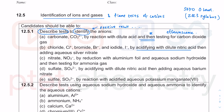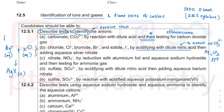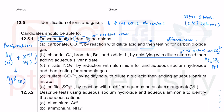We acidify with dilute nitric acid to ensure no carbonate is present, because silver carbonate is also insoluble and would give a false positive. These are precipitation reactions with silver nitrate: aqueous Ag⁺ plus the halide (Cl⁻, Br⁻, or I⁻), both soluble, react to give a solid precipitate. This is a very common ionic equation which must include state symbols.